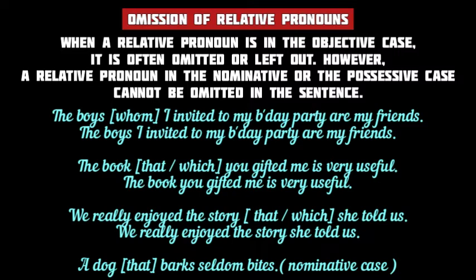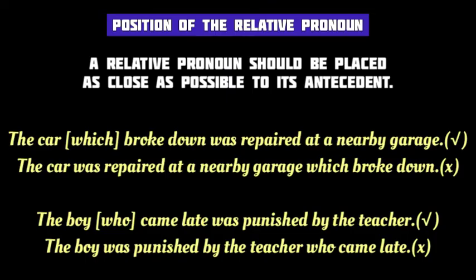Only a relative pronoun in the objective case may be omitted from the sentence. Another important rule is that a relative pronoun should be placed as close to its antecedent as possible — preferably right after it. In the sentence 'The car which broke down was repaired at a nearby garage,' the relative pronoun 'which' comes right after the antecedent 'car,' so the relative pronoun clearly relates to 'car' and the sentence is correct.